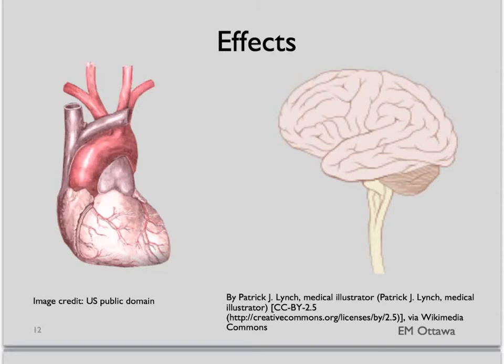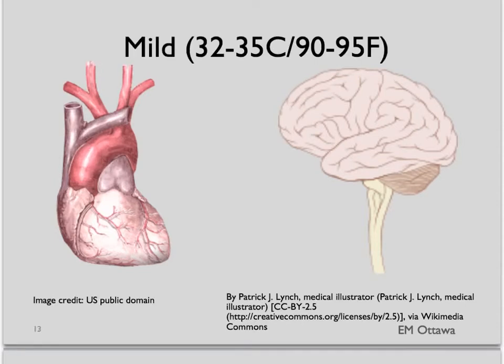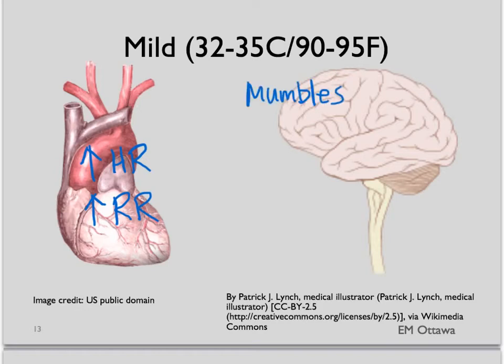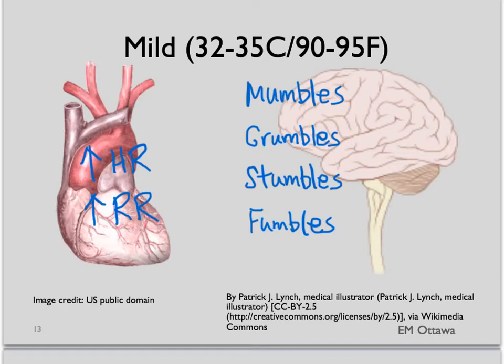What happens with hypothermia? The effects are mainly in the heart and the brain, and as you can imagine, these are worse as you get to a lower temperature. Mild hypothermia is defined as 32 to 35 degrees Celsius. The heart rate goes up and hyperventilation occurs. Neurologically, there are changes in speech, judgment, gait, fine motor skills, and gross motor skills. The muscles start to shiver. This is mild hypothermia.